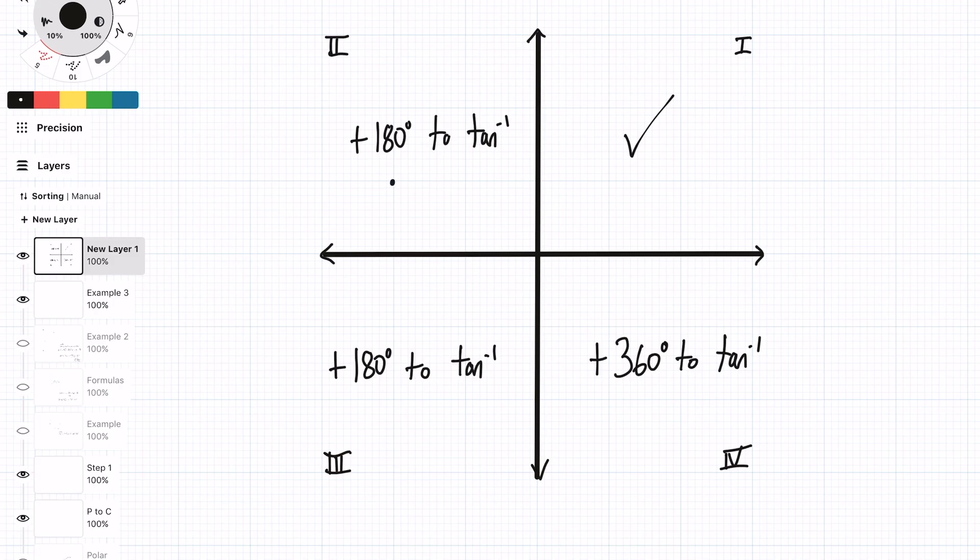But if the point is in the second quadrant, then you'll need to add 180 to the value that you get from calculating arc tan. Same thing for if you're in quadrant 3. Here you'll need to add 180 to the value. And if you're in quadrant 4, you'll need to add 360 degrees to arc tan.